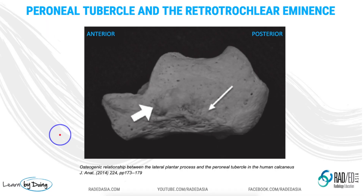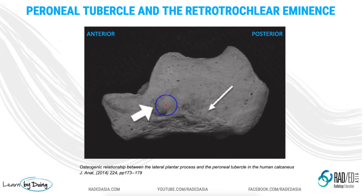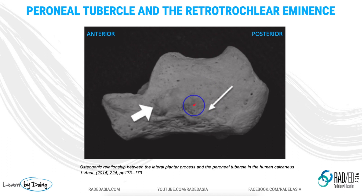This is from the Journal of Anatomy, demonstrating that we have the perineal tubercle here, and posterior to that is the retrotrochlear eminence, with a groove in between them.